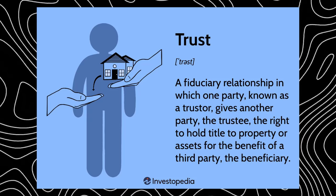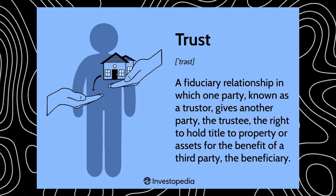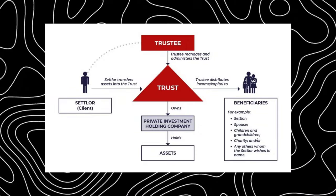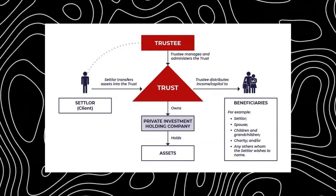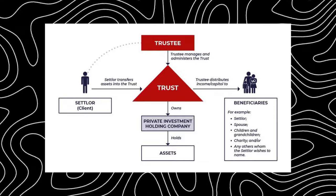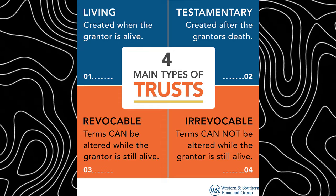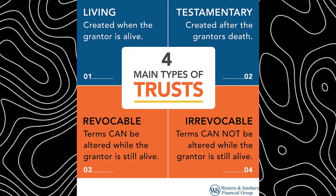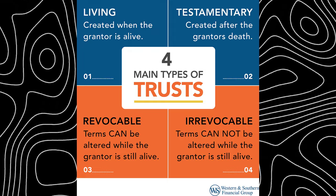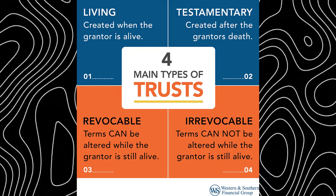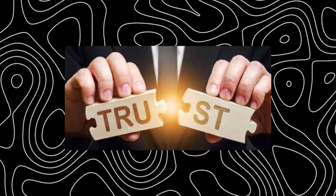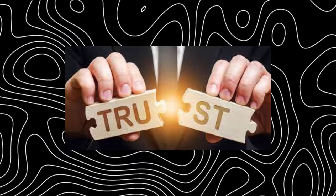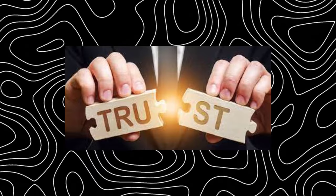Trusts: in finance, a trust is a legal entity that holds assets on behalf of beneficiaries. While wills are more passive for life planning, a trust provides more active oversight and manages assets more efficiently. Trusts often provide tax advantages while protecting wealth for future generations. Assets in a trust are managed as a holding, allowing specific access to certain individuals. The two main types are revocable and irrevocable — differing mainly in how much flexibility you have to change the details after establishment.